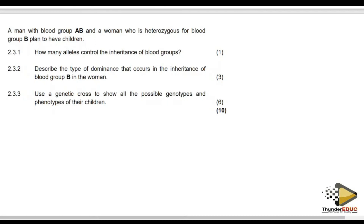A man with blood group AB and a lady with blood group B plan to have children. How many alleles control blood groups? This is from the distinction material — I've already addressed these questions several times.